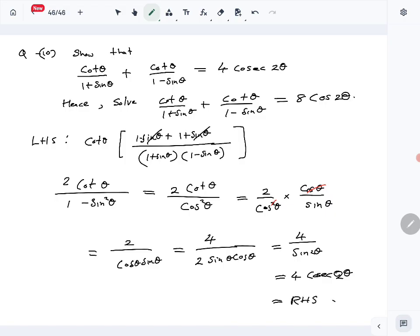So that is the right-hand side. The first part is done. We have shown that cot theta over 1 plus sin theta plus cot theta over 1 minus sin theta is equal to 4 cosec 2 theta. Now we will use that to solve this trigonometric equation.